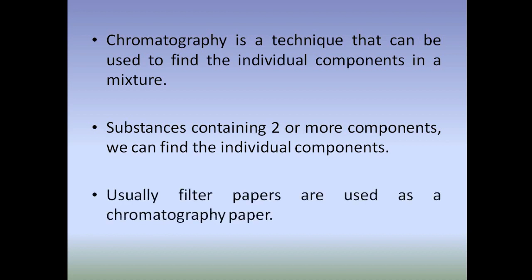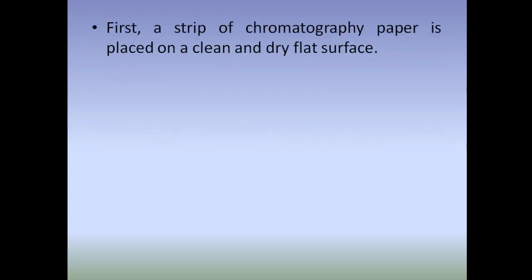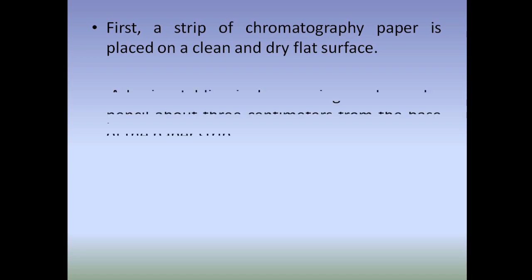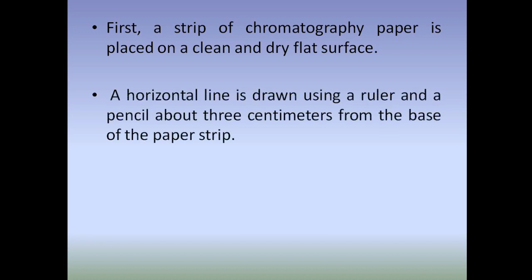Usually filter papers are used as chromatography paper. In paper chromatography, first a strip of chromatography paper is placed on a clean and dry flat surface — if impurities are present on the paper they will interfere with the result. A horizontal line is drawn using a ruler and a pencil about three centimeters from the base of the paper strip.